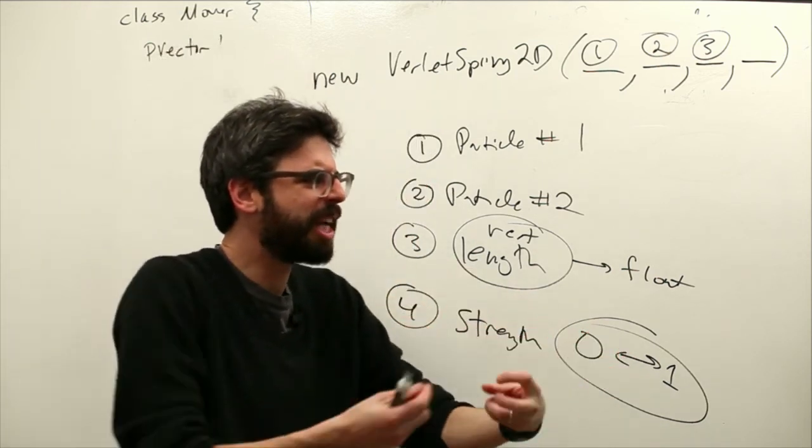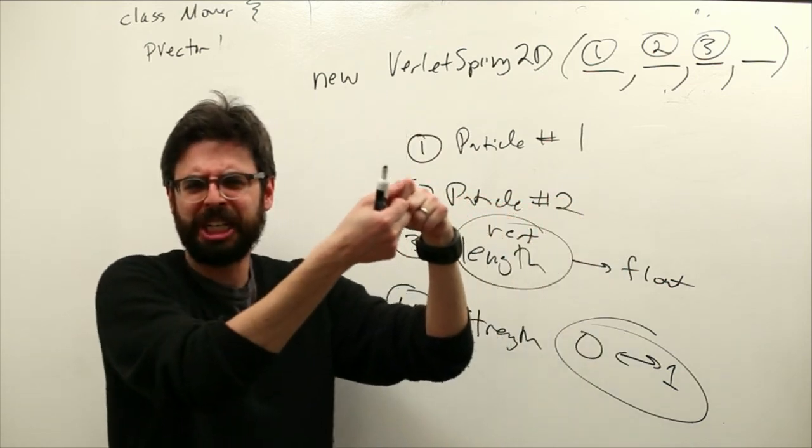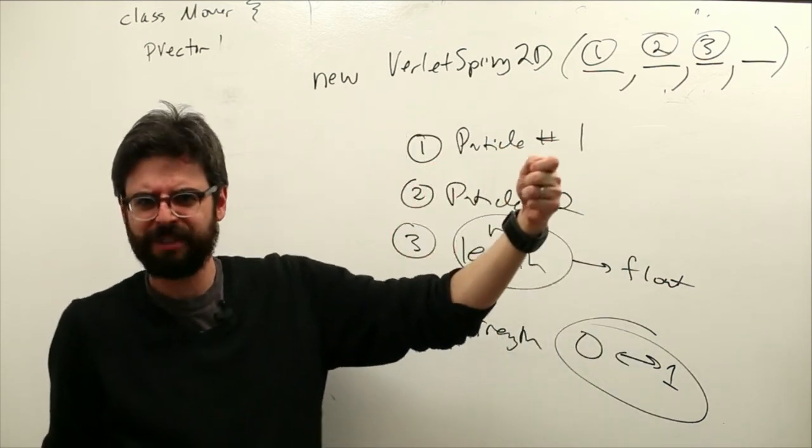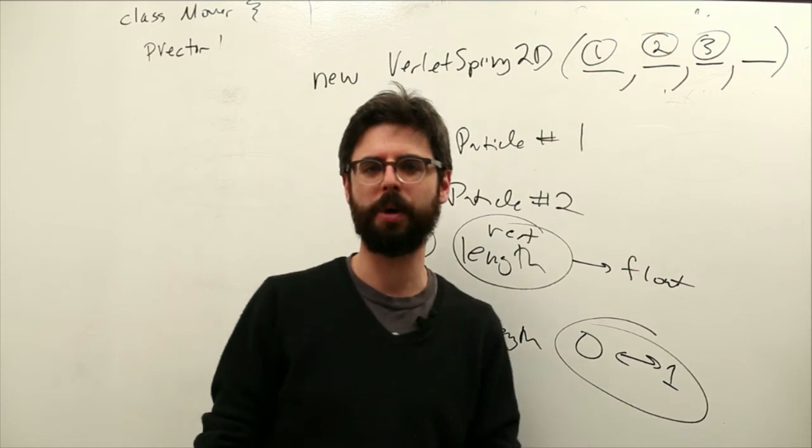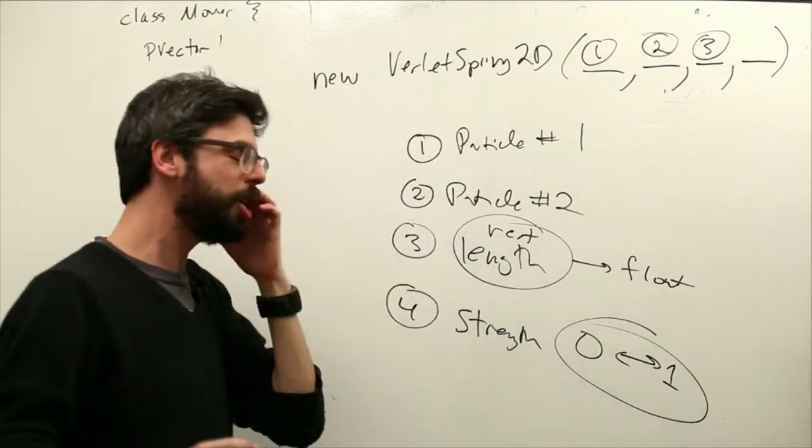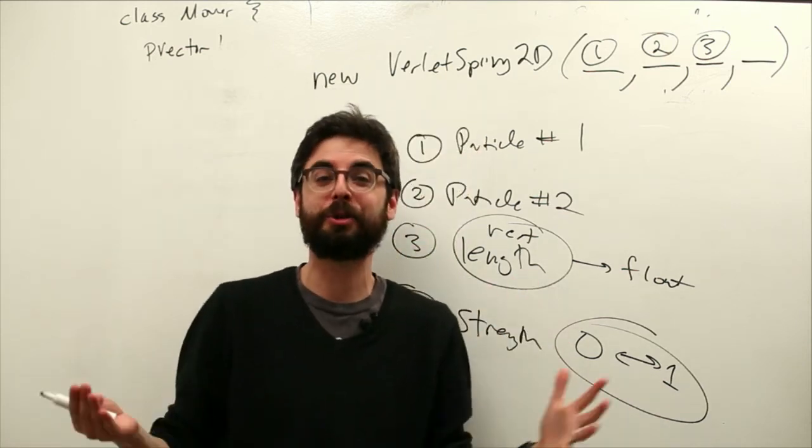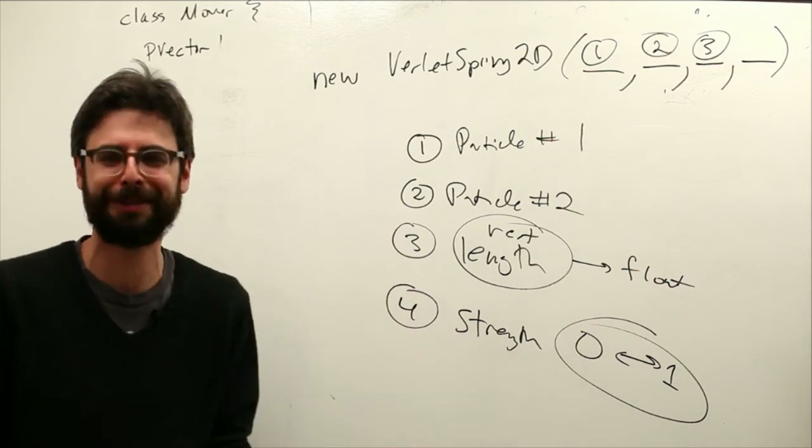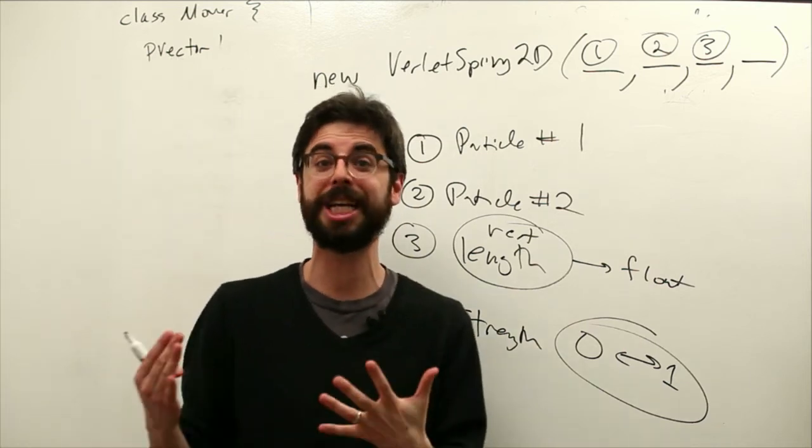So you basically can't, it doesn't have any elasticity to it. And if you make it zero, it's going to be kind of like almost like gum that you could imagine. But you're like pulling and it just kind of keeps pulling forever and ever and doesn't really have the strength to power, to kind of spring back.